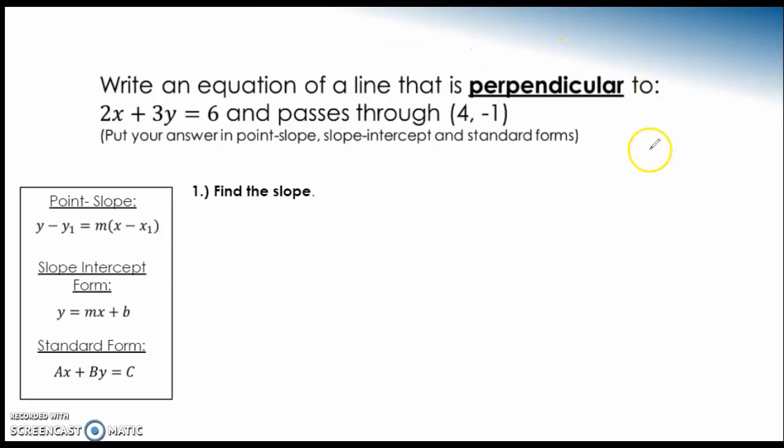All right. So same thing. I'm going to kind of draw a picture over here. So let's just say that we have your line right here that is 2x plus 3y equals 6. We're writing the equation of the line that is perpendicular to it. We know goes, or sorry, has a slope of we're not sure of, but it goes through the point 4 comma negative 1.